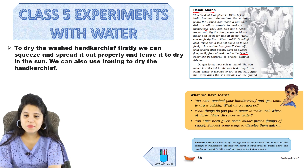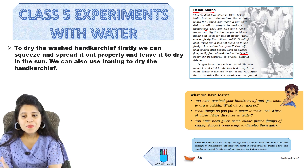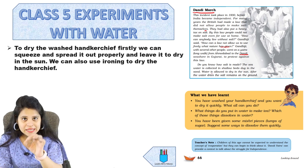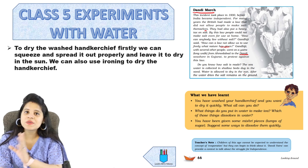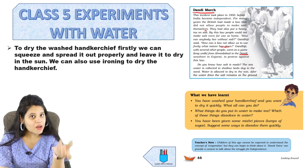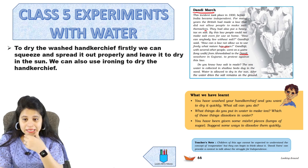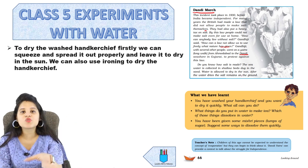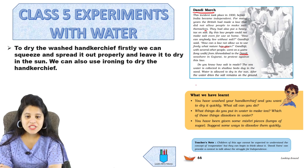Do you know how salt is made? The sea water is collected in shallow beds dug in the sand. Water is allowed to dry in the sun. After the water dries, salt remains on the ground — the water evaporates and just leaves the salt behind. This was about the Dandi March, and our chapter is now finished.